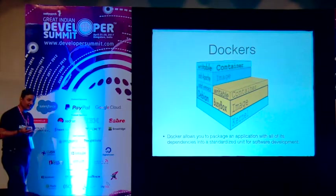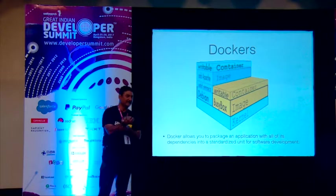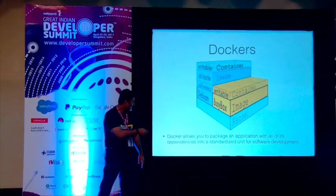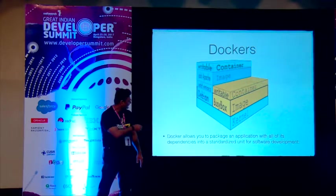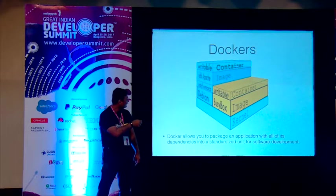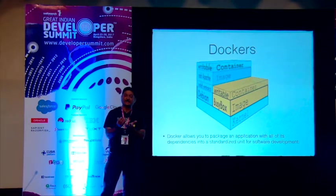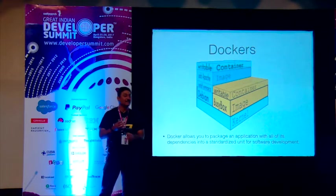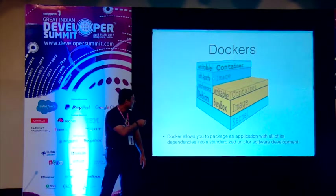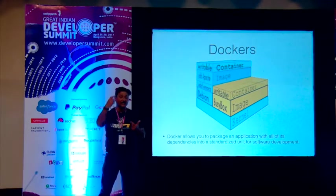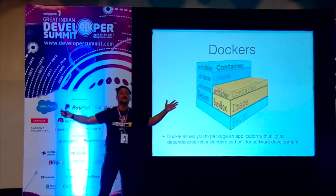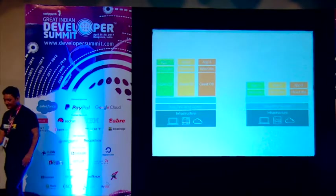What does Docker really provide? It provides different layers — think of it like a burger with different layers. You have a kernel, on top of which you might have an OS image like Ubuntu, and on top of that you put your own application. The advantage is that if one version changes, you just redeploy that layer. If Apache gets a new version, you only change and test Apache — not the whole stack, which was the problem with the old model.